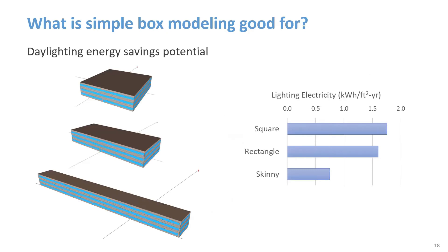Daylight energy savings potential. An energy model is also good for a rough estimate of energy savings potential from daylighting controls. Most simulation programs can estimate indoor daylight illuminance at each hour and adjust lighting power accordingly. While these methods are simpler compared to specialized daylighting simulation software, they are good enough for an estimate of potential savings, and they also capture the impact on heating and cooling loads.